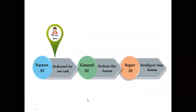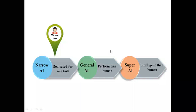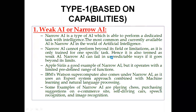Looking at this picture again: Narrow AI is dedicated for one task; General AI can perform like a human; and Super AI — also called Strong AI — is not just as intelligent as humans, but more intelligent than human beings. All these concepts about Type 1 AI should now be clear.